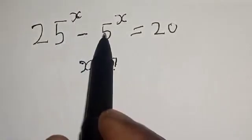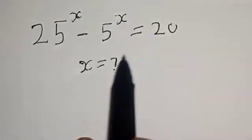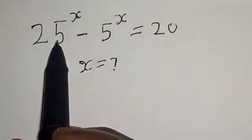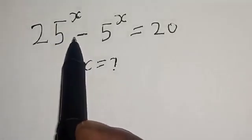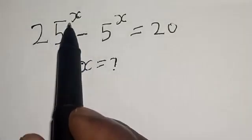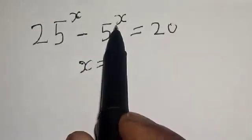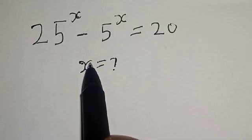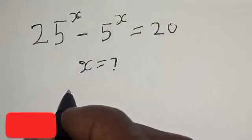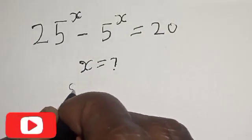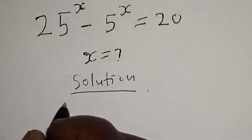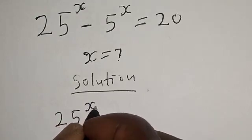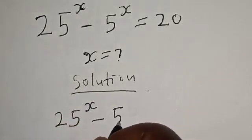25 raised to power x minus 5 raised to power s is equal to 20. What is the value of s? Welcome to my class. In this class we want to find the value of s from this equation: 25 raised to power x minus 5 raised to power s is equal to 20. Please don't forget to like, comment, share, and subscribe.